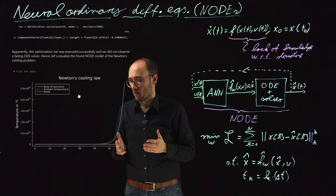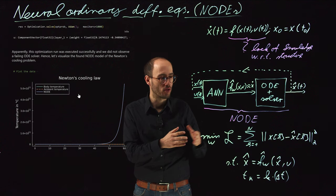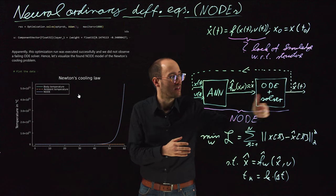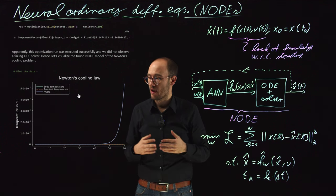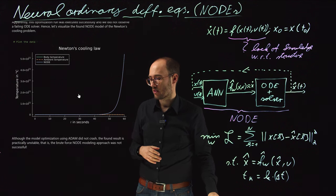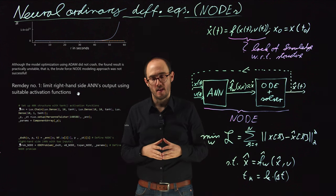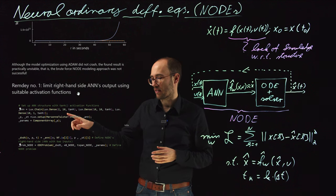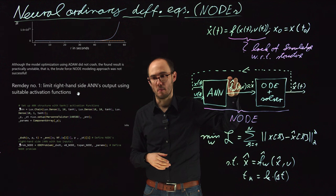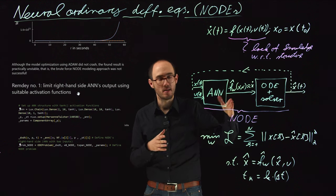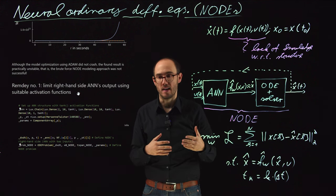So what have we learned? The NODE approach is appealing because we don't need pre-knowledge, but the simulation loop must be stable. For our Newton's cooling example, I have two remedies. The first is simple: modify the right-hand side by adding tanh activation functions at the input layer, hidden layer, and specifically at the output layer. This limits F-hat to between minus 1 and plus 1, bounding the ANN output and stabilizing the entire ODE loop numerically.